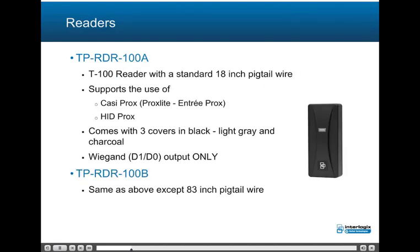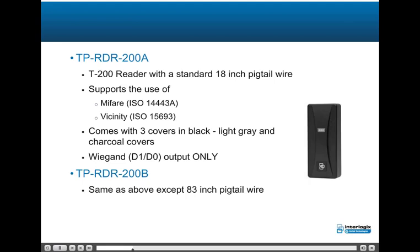Readers available include the TPR-DR100A, a reader with a standard 18-inch pigtail wire that supports CASI prox and HID prox cards, comes with three covers in black, light gray, and charcoal, and has Wiegand output only. The TPR-DR100B is the same except with an 83-inch pigtail wire. The TPR-DR200A reader with an 18-inch pigtail wire supports Mifare ISO 14443A and Vicinity ISO 15693, comes with three covers in black, light gray, and charcoal, and has Wiegand output only. The TPR-DR200B is the same as the TPR-DR200A except with an 83-inch pigtail wire.